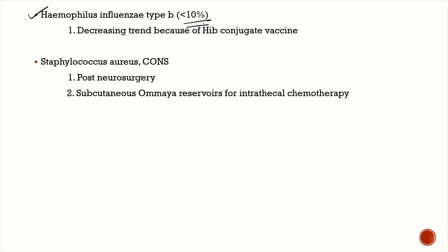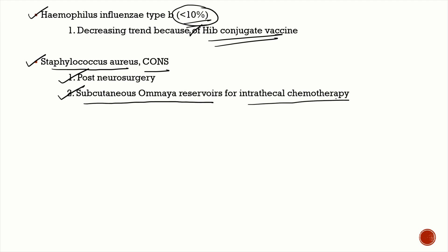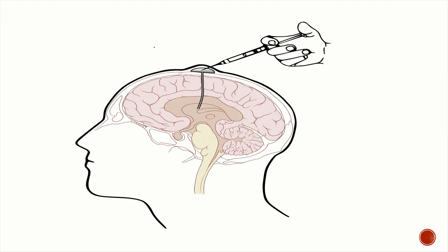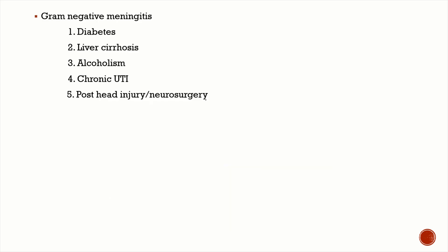Haemophilus influenzae type b is now a less common cause — less than 10% of bacterial meningitis — due to routine Hib conjugate vaccination. Staphylococcus aureus and coagulase-negative Staphylococcus are important causes post-neurosurgery and in patients with a subcutaneous Ommaya reservoir for intrathecal chemotherapy. Risk factors for gram-negative meningitis include diabetes, liver cirrhosis, chronic alcoholism, chronic UTIs, and post-head injury or post-neurosurgery.